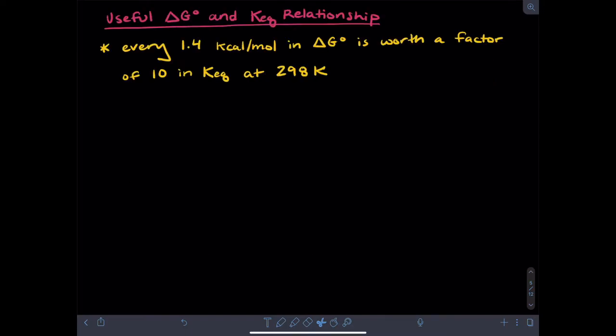If you're given a Gibbs free energy value for a reaction, you can always calculate an equilibrium constant at a given temperature. But there's a shortcut we can use to estimate values. This is that every 1.4 kilocalories per mole in delta G is worth a factor of an order of magnitude, or 10 in KEQ, particularly at room temperature.